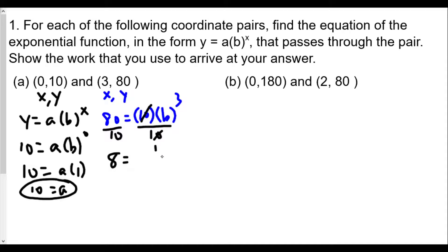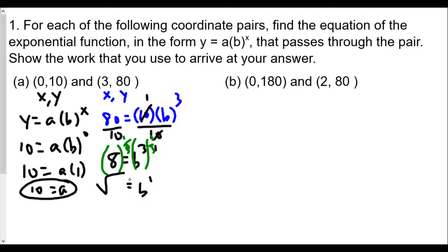We have b^3 = 8. To solve for b, we raise both sides to the reciprocal of the exponent. The reciprocal of 3 (or 3/1) is 1/3, so we raise both sides to the 1/3 power. Using the power rule, b^3 raised to the 1/3 gives b^1. And 8 to the 1/3 is the cube root of 8, which equals 2, since 2 × 2 × 2 = 8. Therefore b = 2.